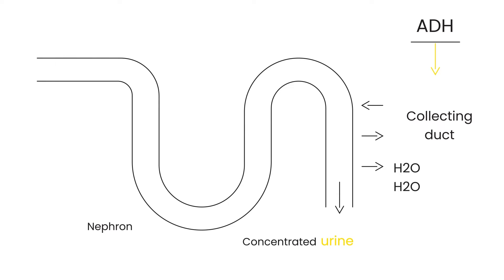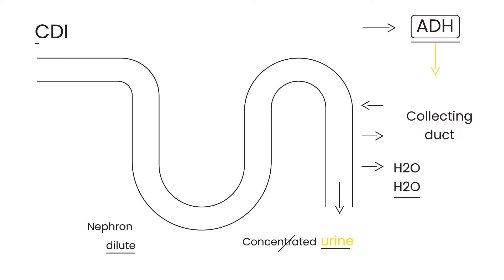The condition CDI involves ADH not being present in adequate amounts. When you don't have ADH — either none or very little — this reabsorption of water does not happen. Instead of concentrated urine, you get very dilute urine. The water isn't being reabsorbed into your bloodstream; it's being urinated out. This excessive urination is called polyuria.